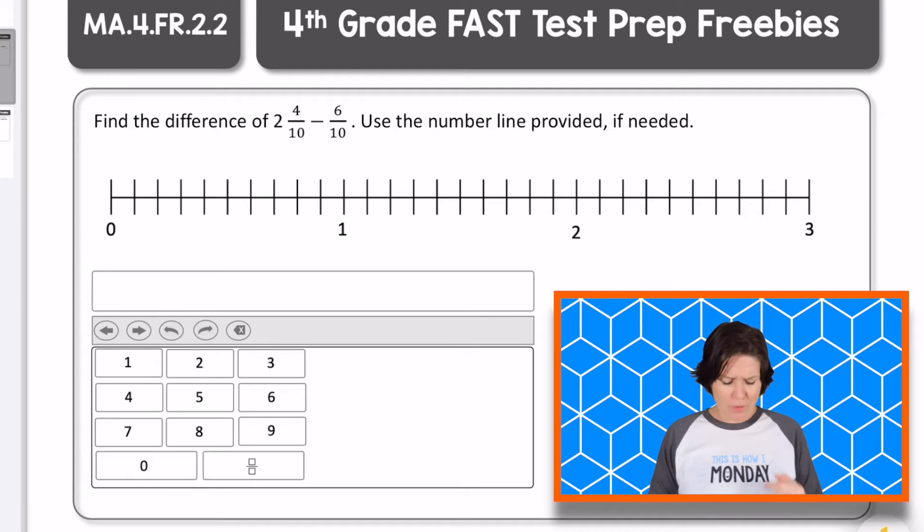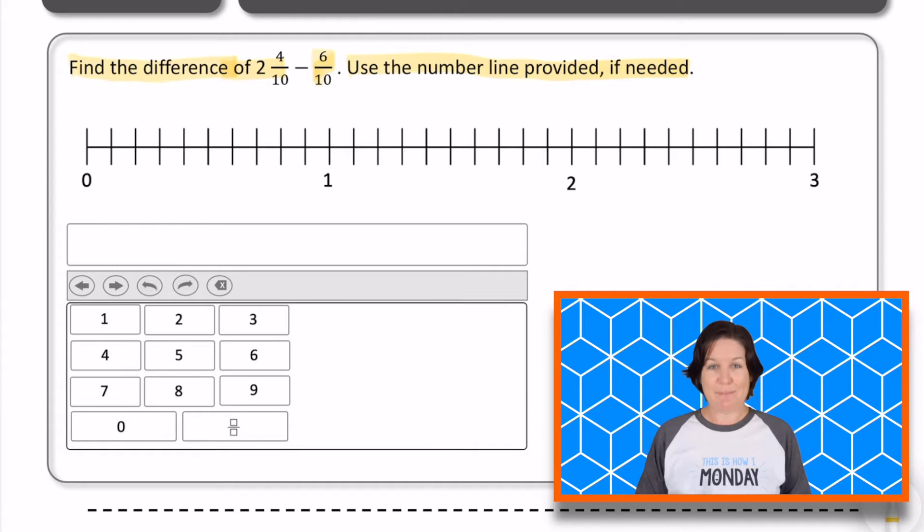Welcome back, fourth grade. So let's go over this problem. It says to find the difference, which means that we need to what? Subtract, right? Find the difference of two and four tenths minus six tenths. Use the number line provided if needed. If this were a computer-based test, I might have to actually point at the number line to kind of go backwards if I wanted to. So right away, we know that we're taking two and four tenths. That's our starting point. And then we need to go back six tenths.